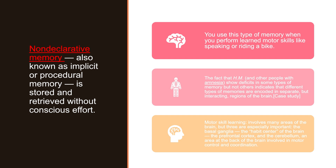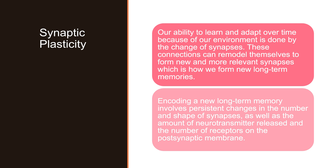Thinking back to the case study: the fact that Henry and other people with amnesia showed deficits in certain types of memories but not all of them at once implies that different types of memories are stored in different anatomical locations, but are sometimes associated with each other via certain connections. Different types of memories are encoded in separate but interacting interfaces.